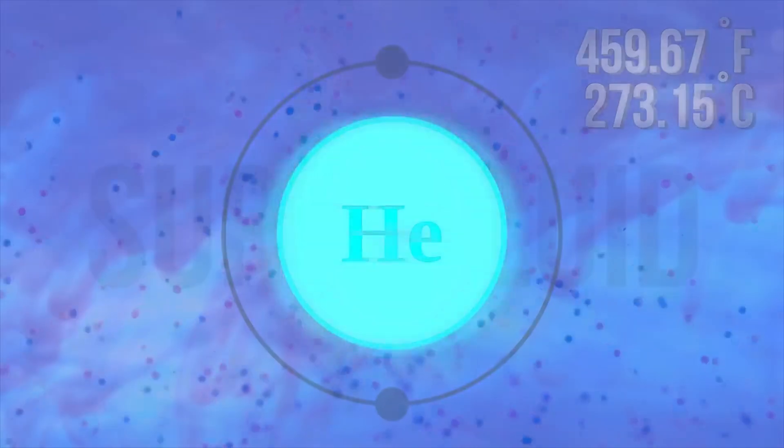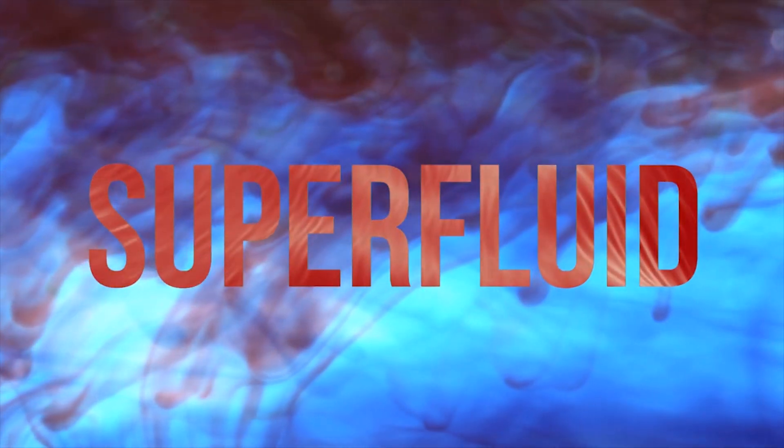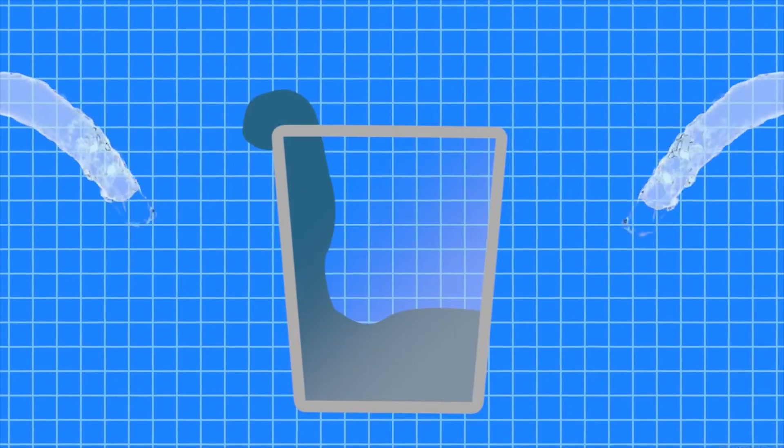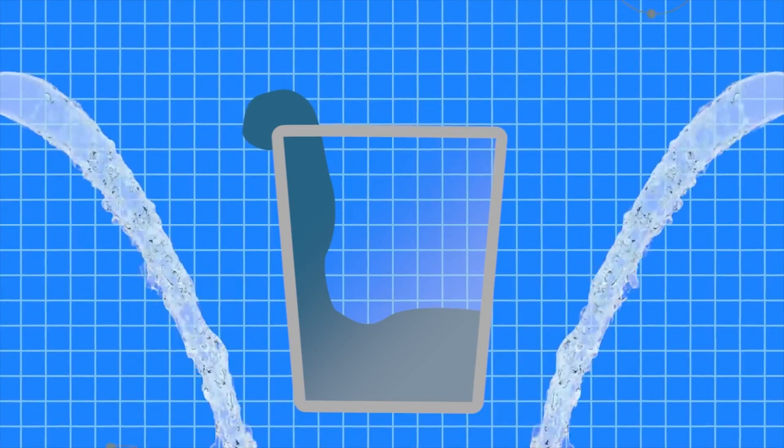This means that it can flow without any friction. This lack of friction means that it can climb up over the sides of glasses or leak through the cracks in a container. Helium superfluid is outrageously hard to contain.